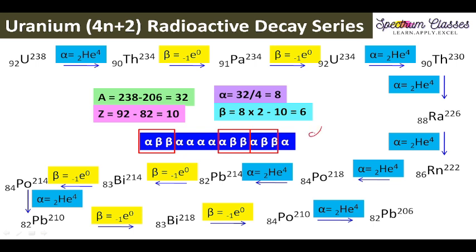The full sequence is: alpha-beta-beta, then 4 times alpha, then 2 times alpha-beta-beta, and the last one is alpha. So these 14 steps can be memorized as: alpha-beta-beta, 4 times alpha, alpha-beta-beta, alpha-beta-beta, then alpha.